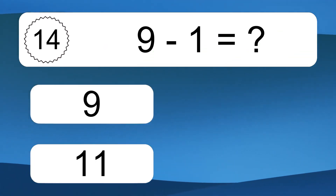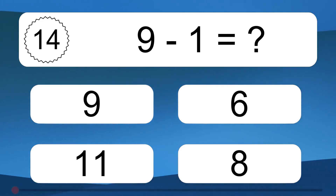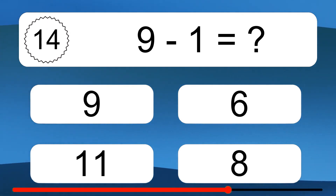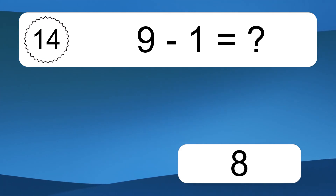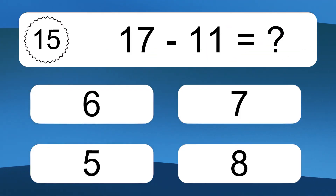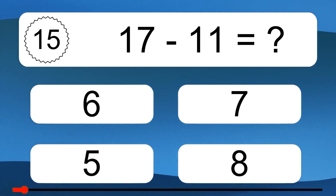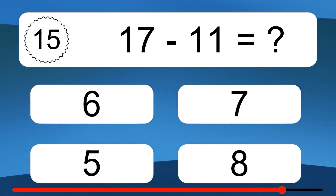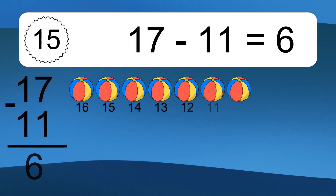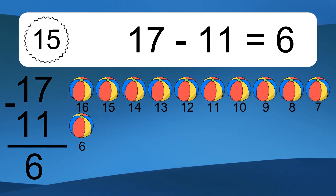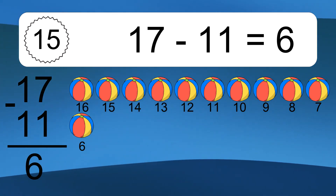9 minus 1 equals what? 9 minus 1 equals 8. Let's count it: 8. 17 minus 11 equals what? 17 minus 11 equals 6. Let's count it: 16, 15, 14, 13, 12, 11, 10, 9, 8, 7, 6.